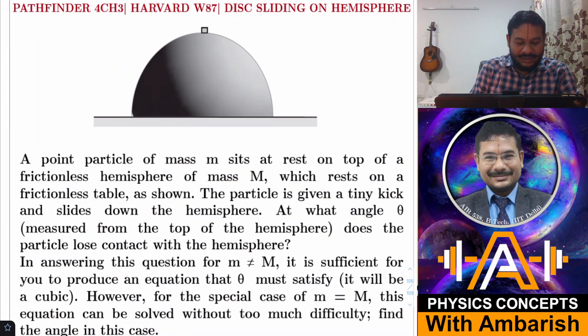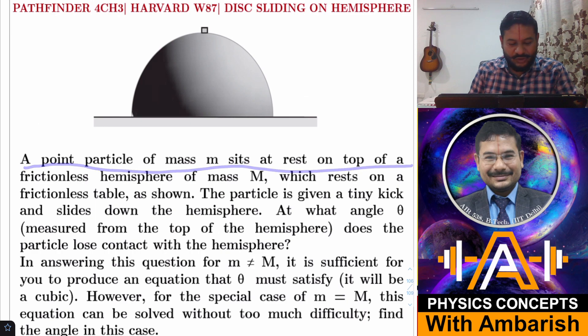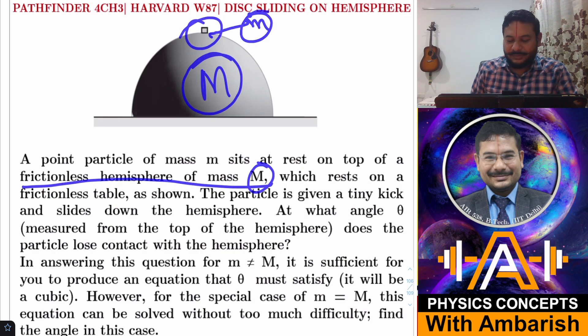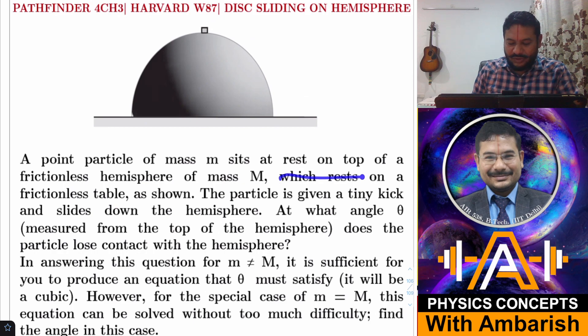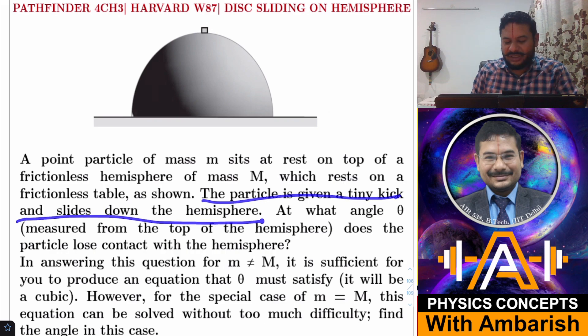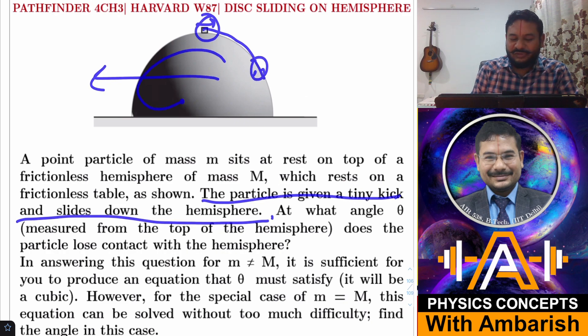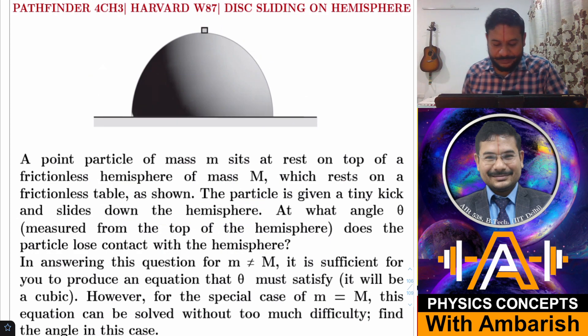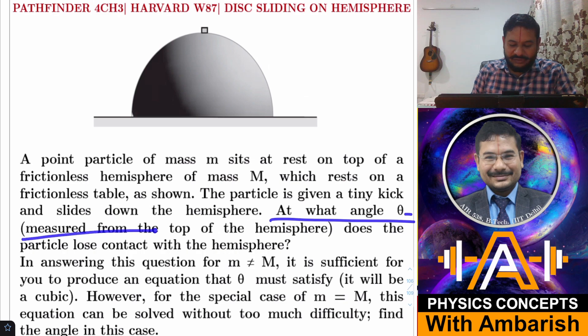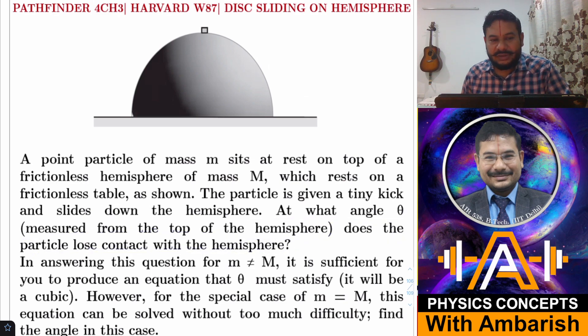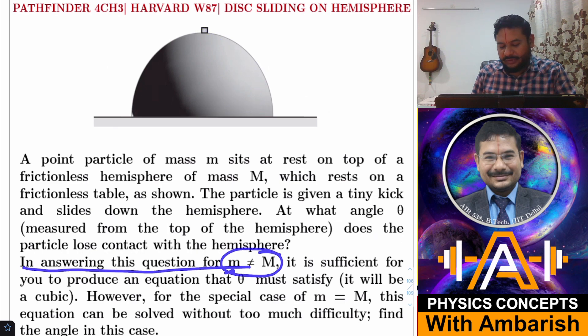Here's the problem. A point particle of mass m sits at rest on top of a frictionless hemisphere of mass capital M, which rests on a frictionless table as shown. The particle is given a tiny kick and slides down the hemisphere. But in the process, the hemisphere will also move because it's not fixed and it's on a frictionless surface. At what angle theta measured from the top of the hemisphere does the particle lose contact with the hemisphere? We have to find out where the contact is lost.